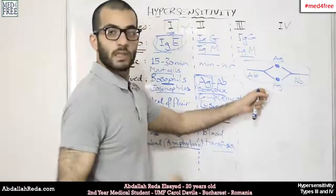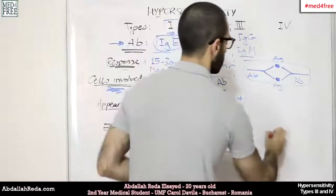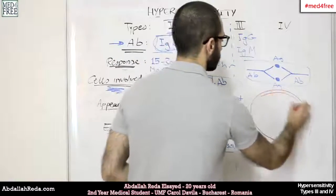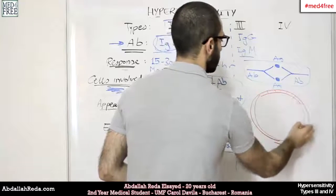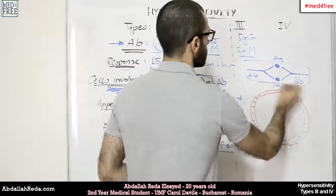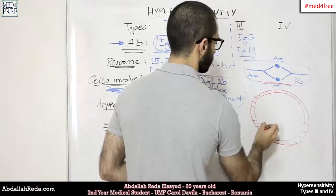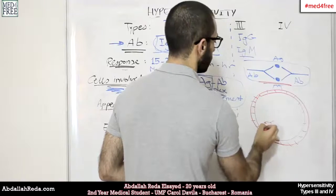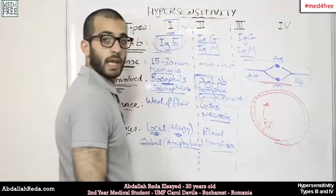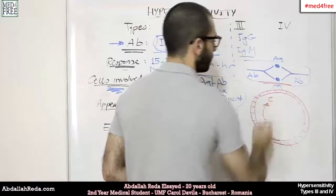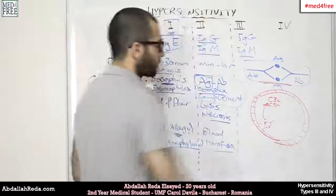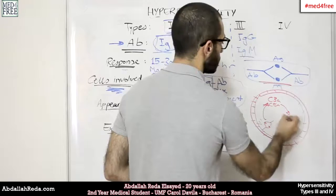If this complex is found in a blood vessel, it's hard to get rid of it, and what happens is this kind of complex is going to accumulate on the sides of the blood vessel. This antigen-antibody complex is going to activate the complement, especially proteins — we have C3a and C5a — and these would induce the basophils.